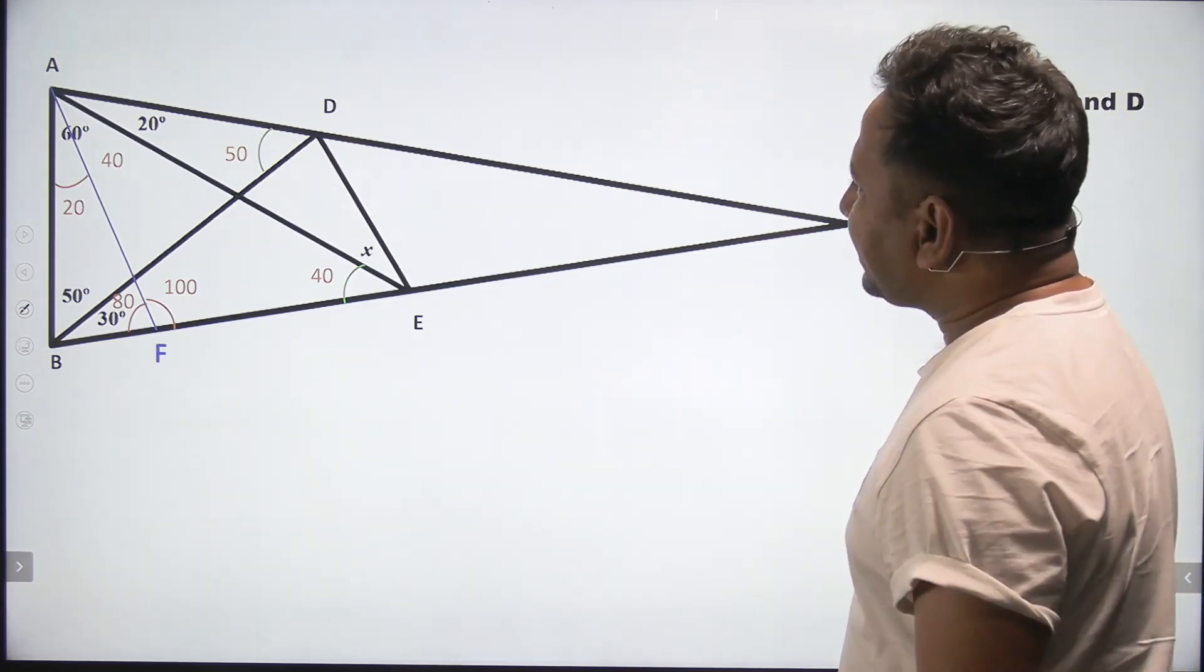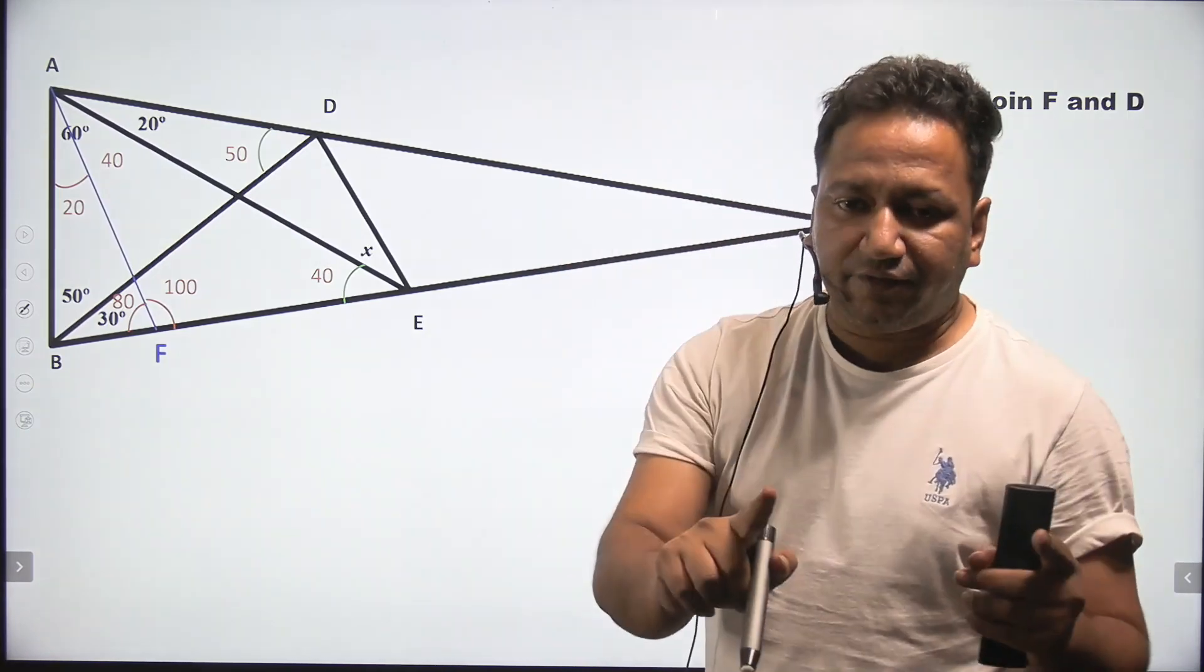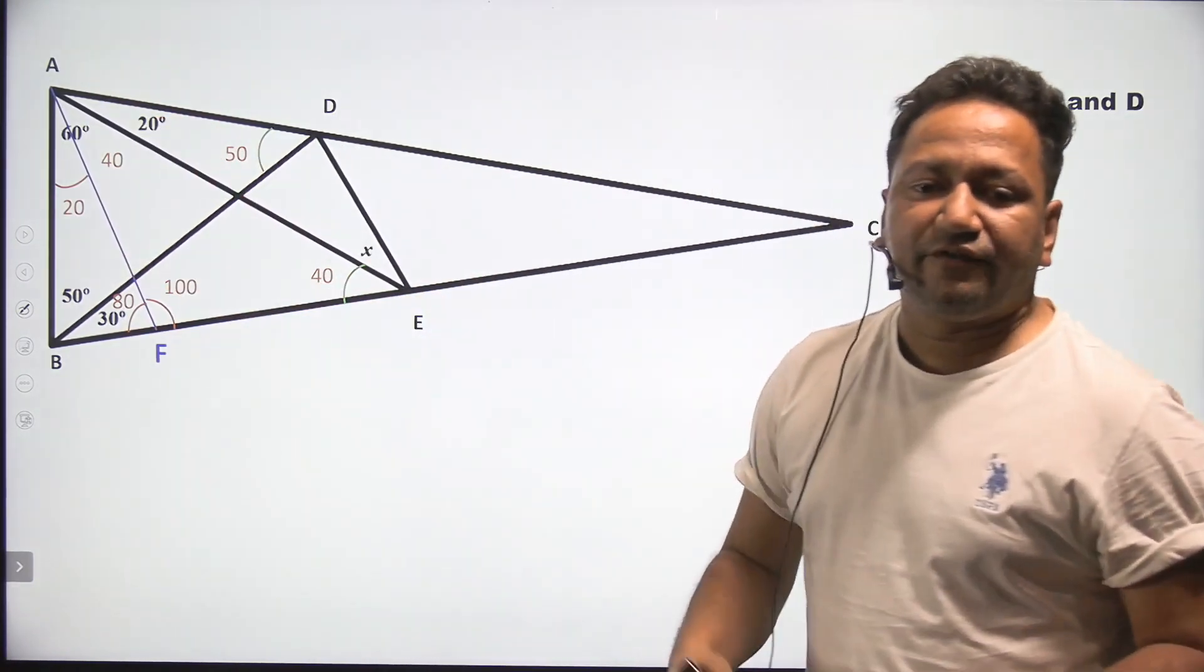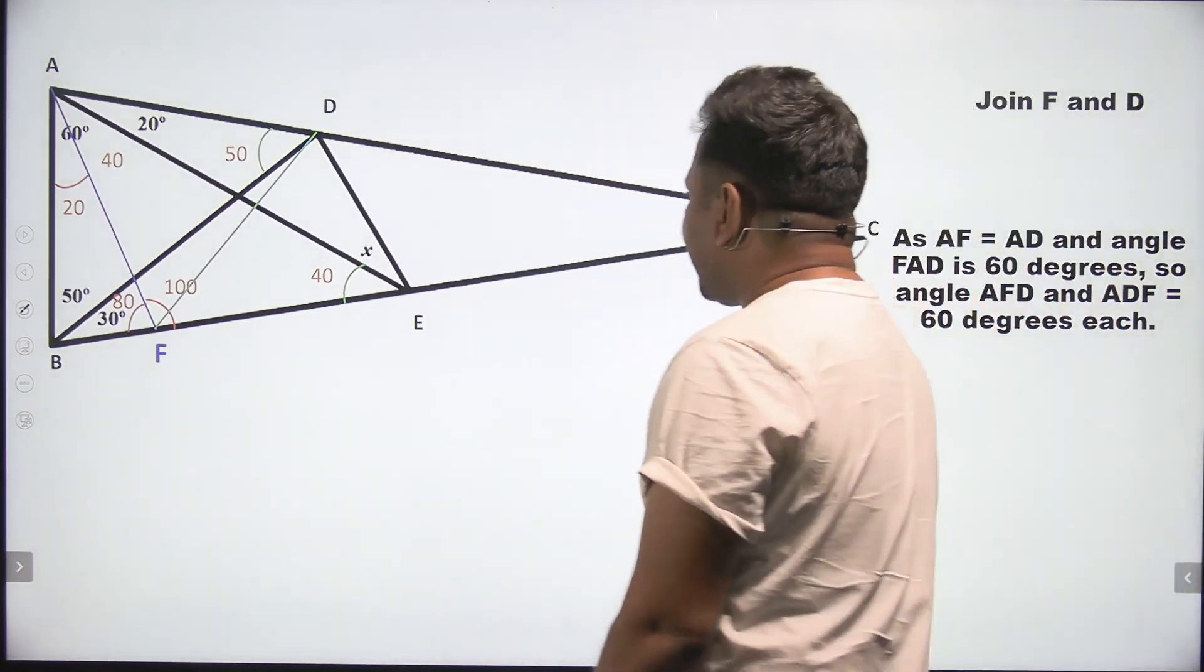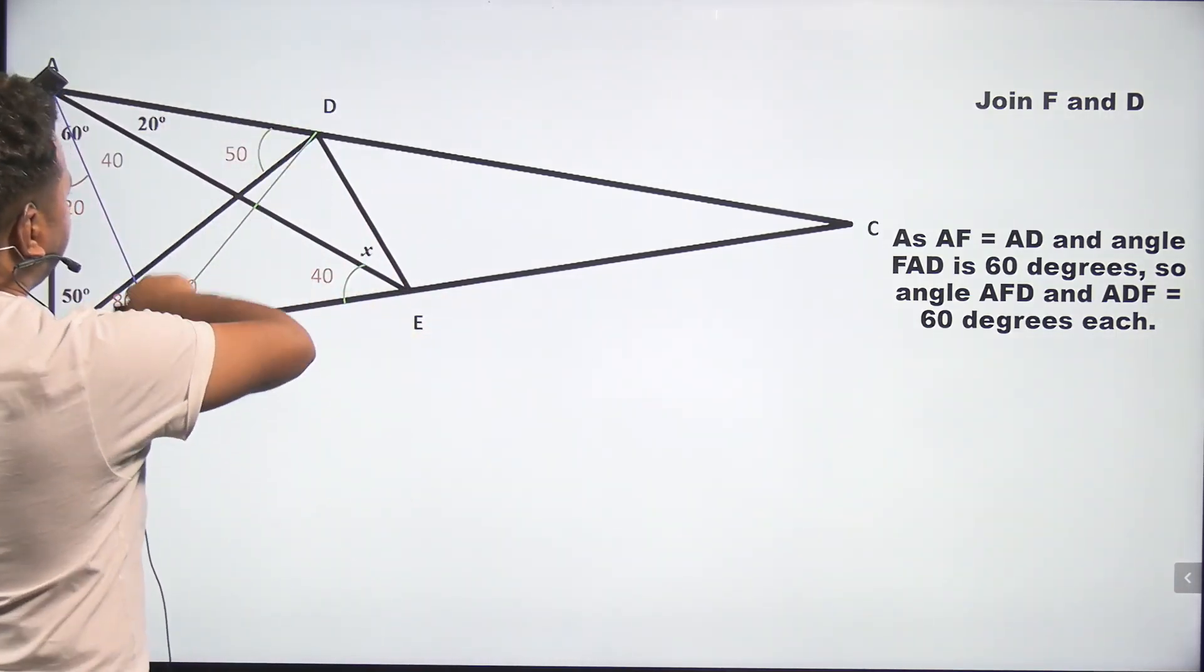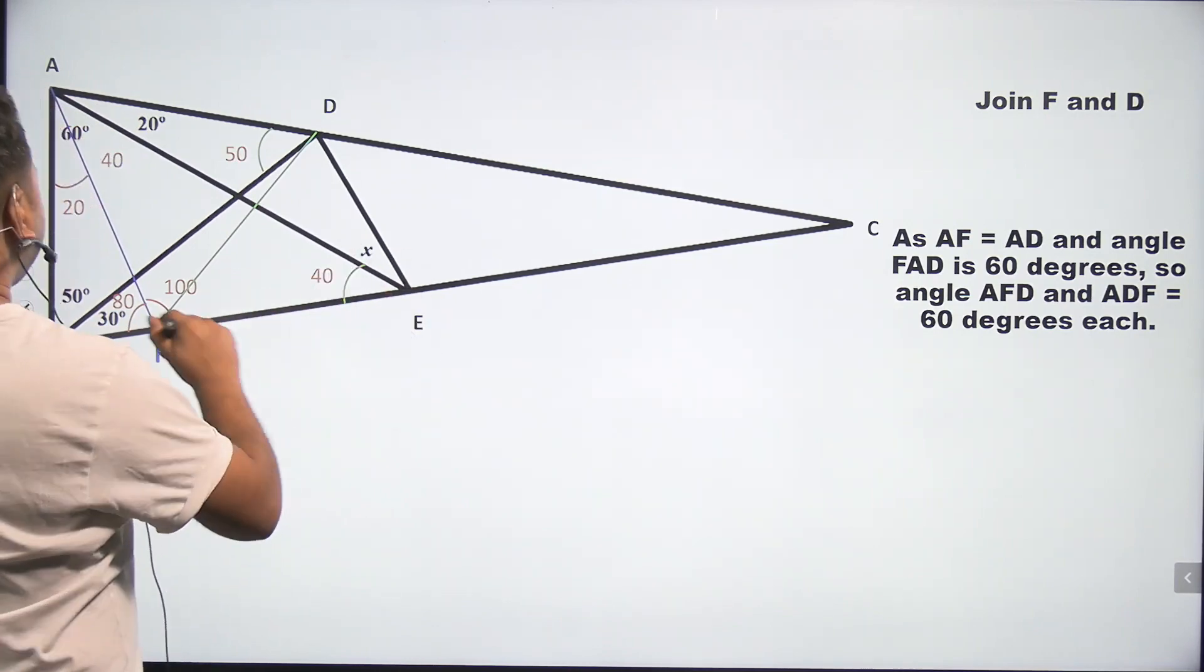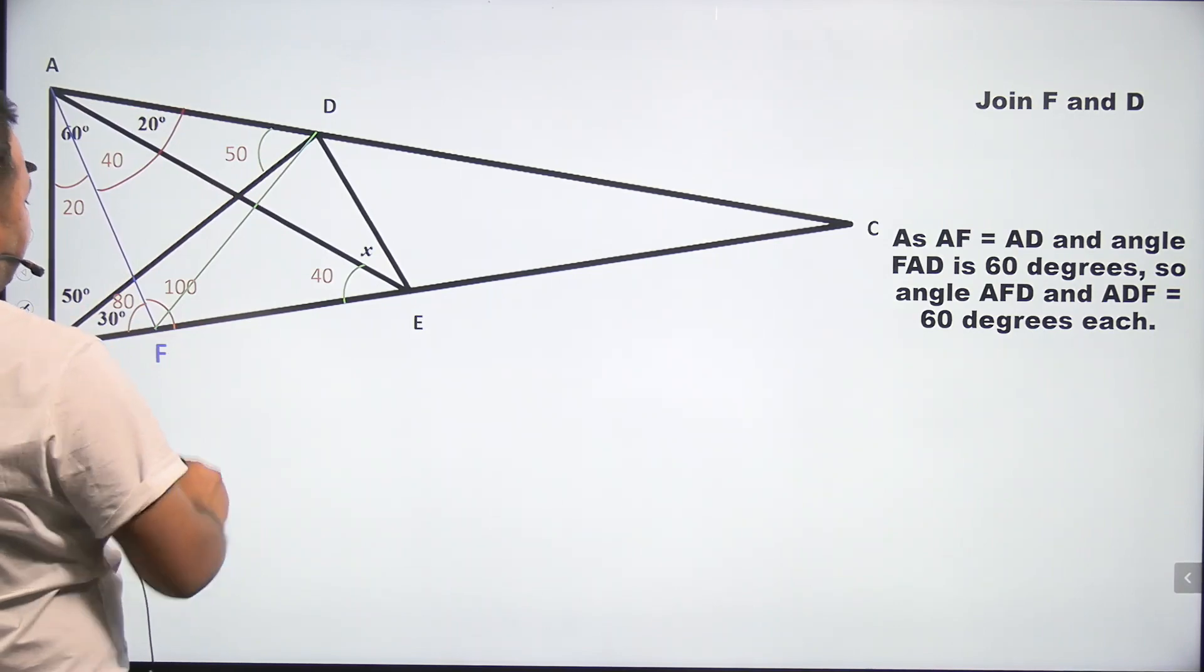Next, join F and D. So basically, in the first step, I drew this AF. Now, I'll join F and D. So basically, I'm making one more triangle. Then, as AF is equal to AD, AF and AD are equal from the previous slide. As I said, combining all three statements, we can say that. So AF and AD is equal and angle FAD is 40 plus 20 or I can say 60.